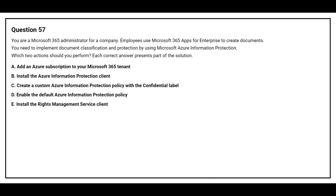Question number 57. You are a Microsoft 365 administrator for a company. Employees use Microsoft 365 Apps for Enterprise to create documents. You need to implement document classification and protection by using Microsoft Azure Information Protection. Which two actions should you perform?